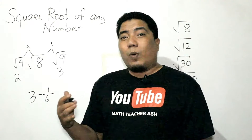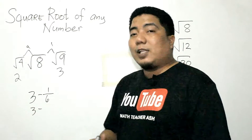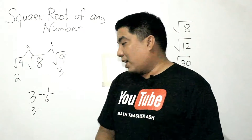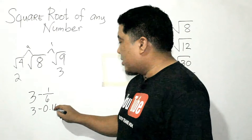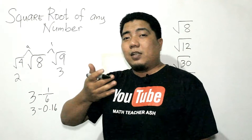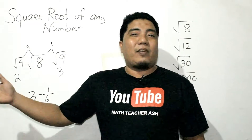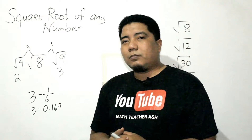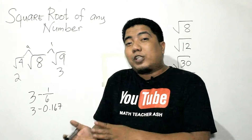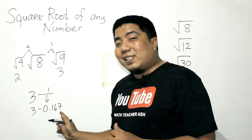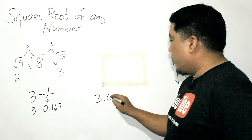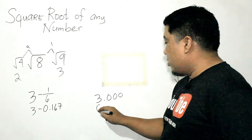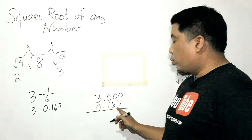Now, simplify 1/6: 1 divided by 6 gives 0.167. Since the decimal never ends, we use 0.167. So we subtract 0.167 from 3.000, giving us 2.83.